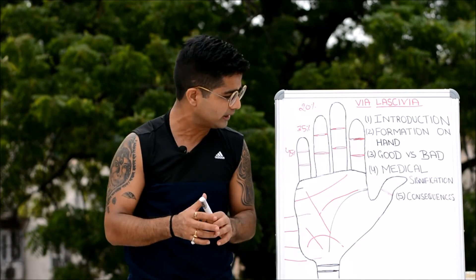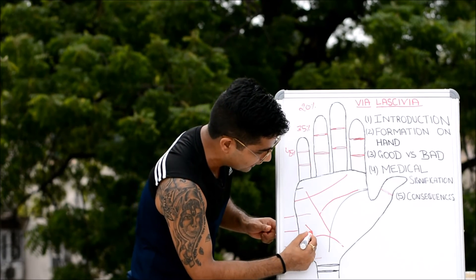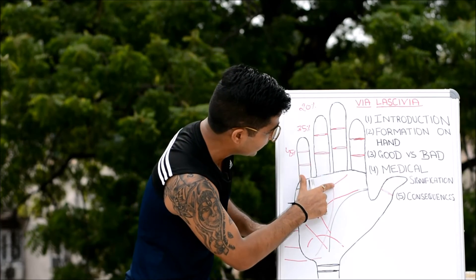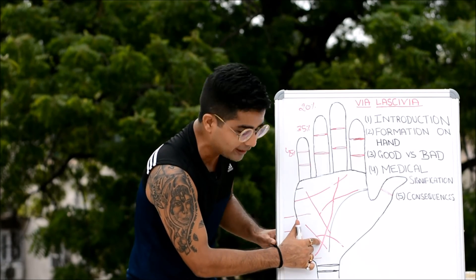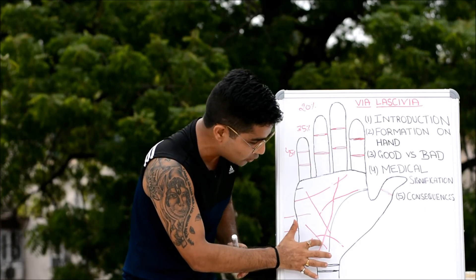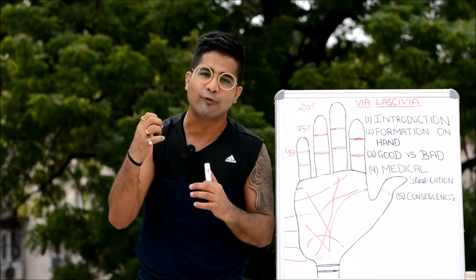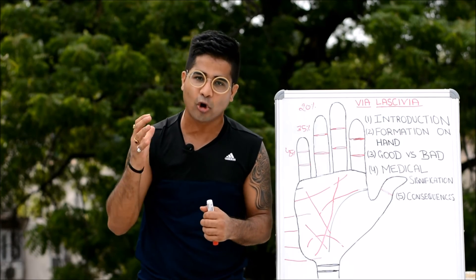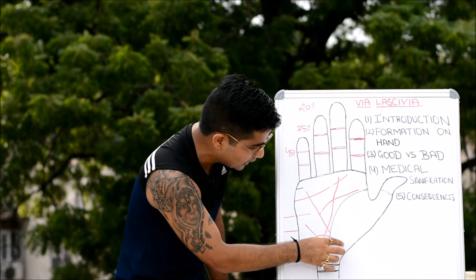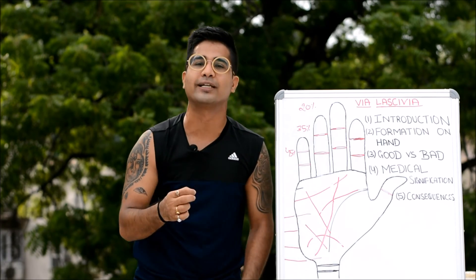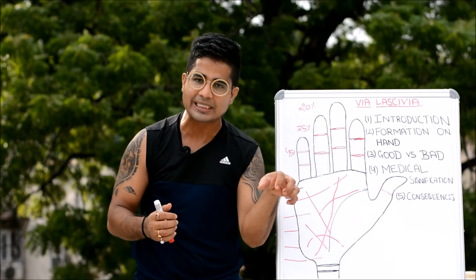Next is discussing the consequences of via lascivia. As always in palmistry, we check what other lines it interacts with. If you have spotted the via lascivia cutting the fate line, then at that particular point in time where it has cut the fate line, if the fate line is getting afflicted, this could be decoded as: because of the person's too much physical indulgence, their career has taken a toll. If the via lascivia is found cutting or afflicting the lifeline, we can look at it from the perspective that because of too much indulgence, the person's health is at risk.